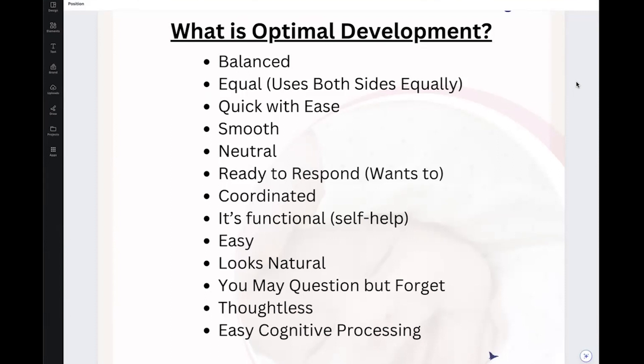As we look at optimal development — what is optimal development? When optimal development is happening in the body, as you observe your child, things look balanced, equal, the movement looks easy, smooth, neutral, and natural. It looks coordinated. You may have a question of worry, but you tend to forget about it because your child is just on their merry way to development.